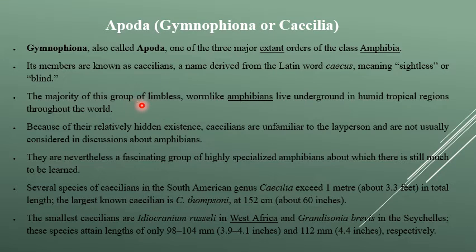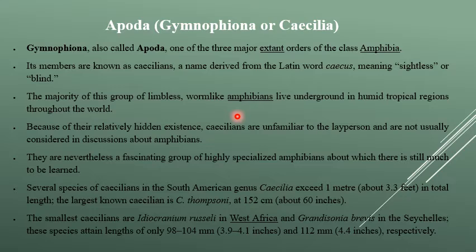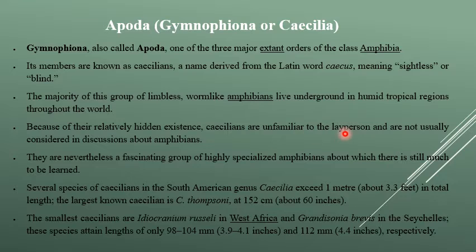In this group, most animals live buried underground or in soil, with a worm-like burrowing lifestyle. Because of their relatively hidden existence, Caecilians are unfamiliar to the lay person, though a young person can occasionally see them.